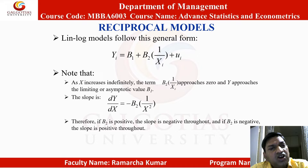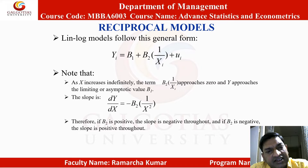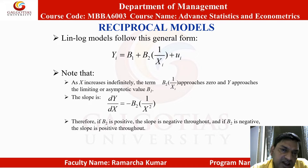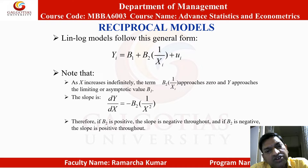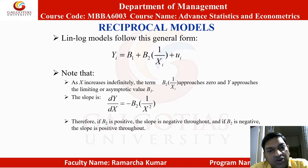Reciprocal models follow the general form: y_i = B1 + B2 times (1/x_i) + u_i. Note that as x increases indefinitely, the term B2 times (1/x_i) approaches 0 and y approaches the limiting or asymptotic value of B1. The slope dy/dx = −B2 times (1/x²). Therefore, if B2 is positive the slope is negative throughout, and if B2 is negative the slope is positive throughout.